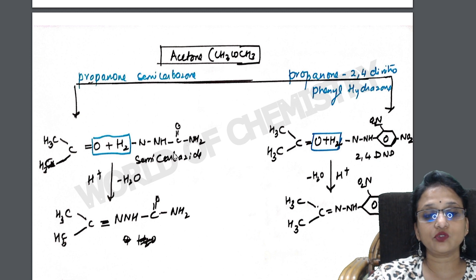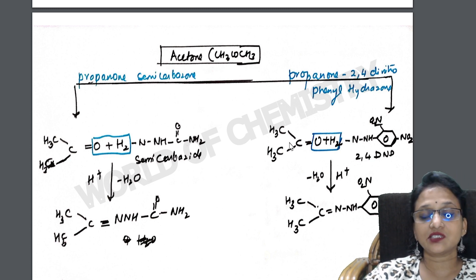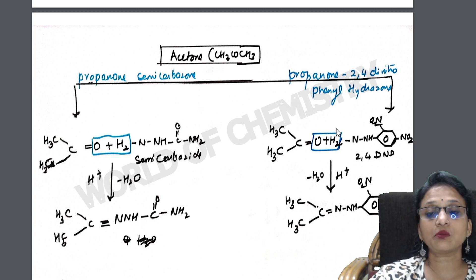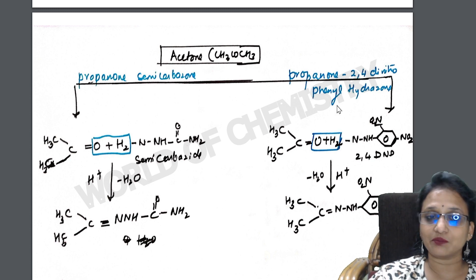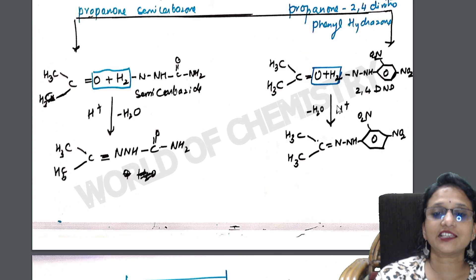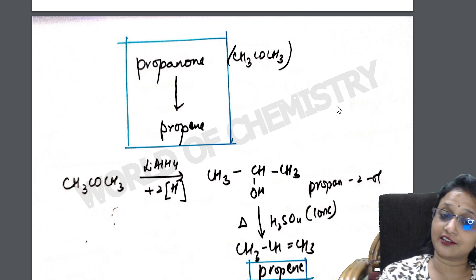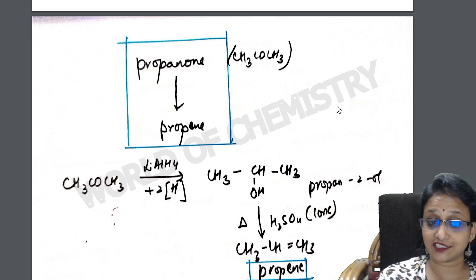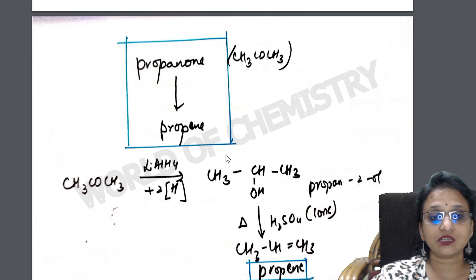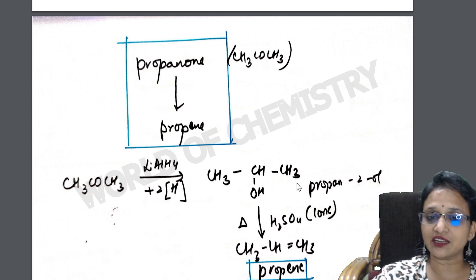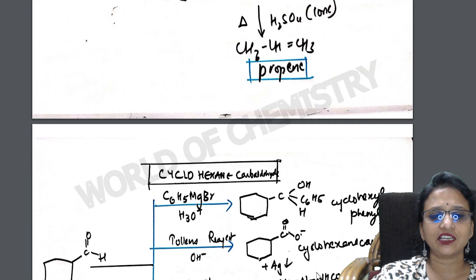Acetone reactions: propanone to propanone semicarbazone — use semicarbazide. Propanone to 2,4-DNP — use phenyl hydrazine, remove a water molecule to get the 2,4-dinitrophenylhydrazone. Propanone to propene: ketones on reduction give secondary alcohols — use lithium aluminium hydride (LiAlH₄), then dehydrate with concentrated sulfuric acid to form the alkene (propene).